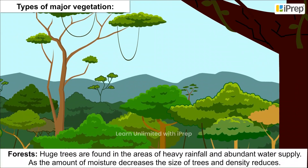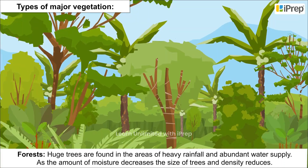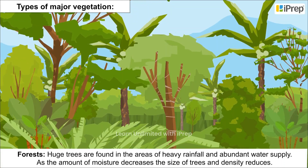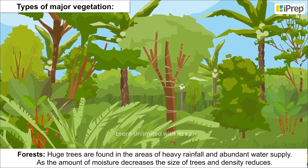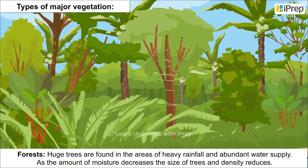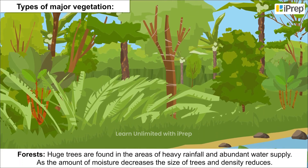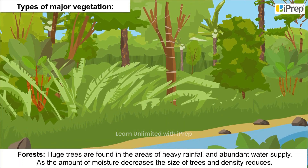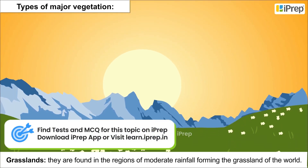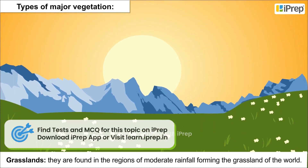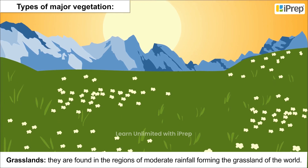Forests: huge trees are found in areas of heavy rainfall and abundant water supply. As the amount of moisture decreases, the size of trees and their density also reduces. Grasslands are found in regions of moderate rainfall, forming the grasslands of the world.